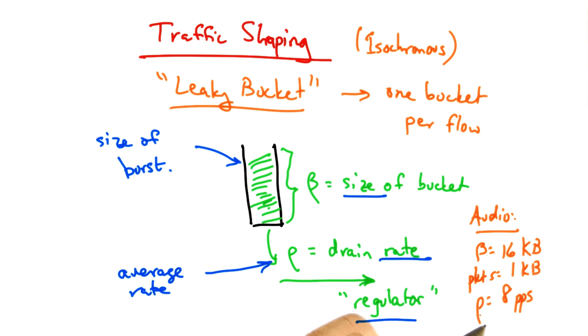The regulator's rate of 8 packets per second would ensure that the audio rate would be smooth to an average rate not to exceed 8 kilobytes per second, or 64 kbps. Setting a larger bucket size can accommodate a larger burst rate.